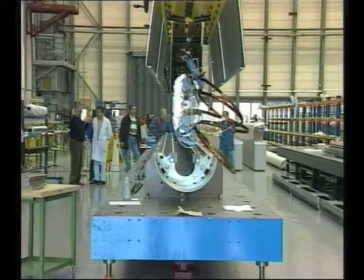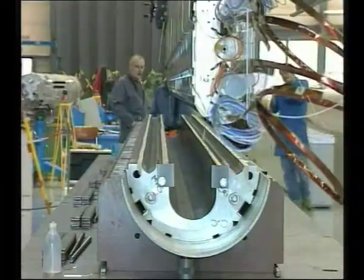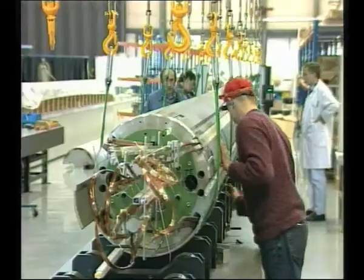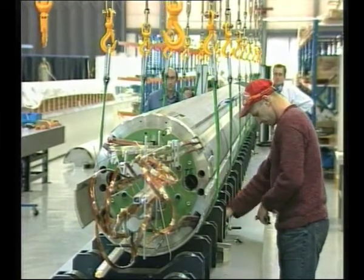In the assembly hall, a complete magnet with its tightening collars is placed in the yoke. Once assembled, the dipole will be introduced into a giant press in order to compress the elements and weld them.